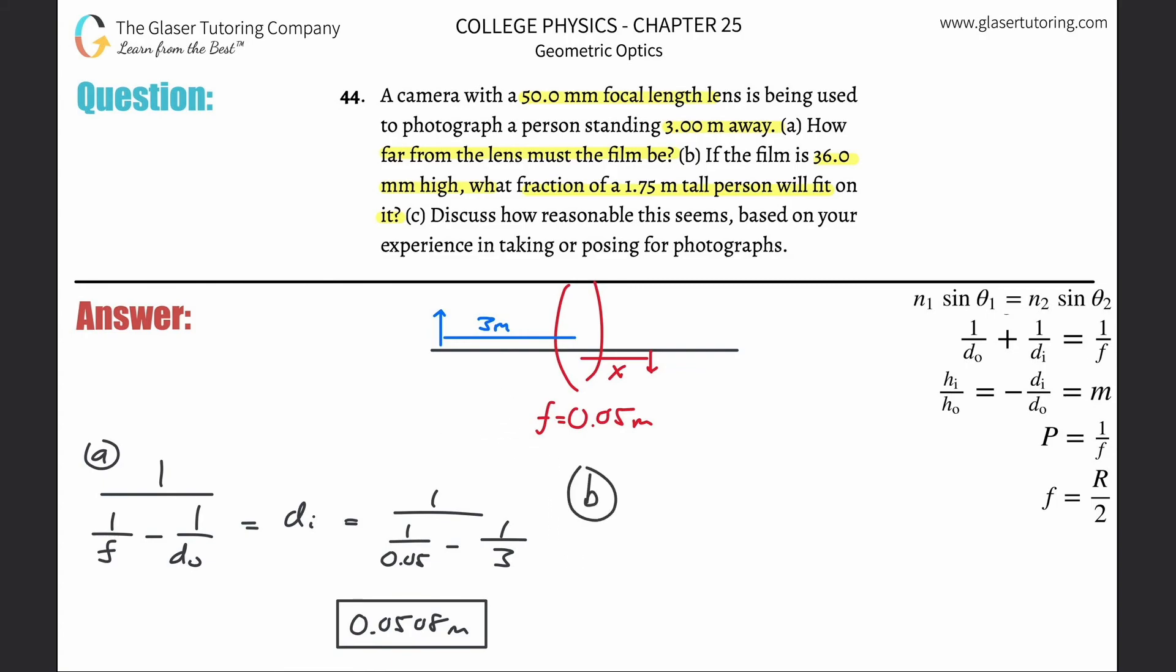So letter b. We have our magnification formula over here, so we know the image distance, we know the object distance. So we can calculate then the magnification. The negative sign implies the direction.